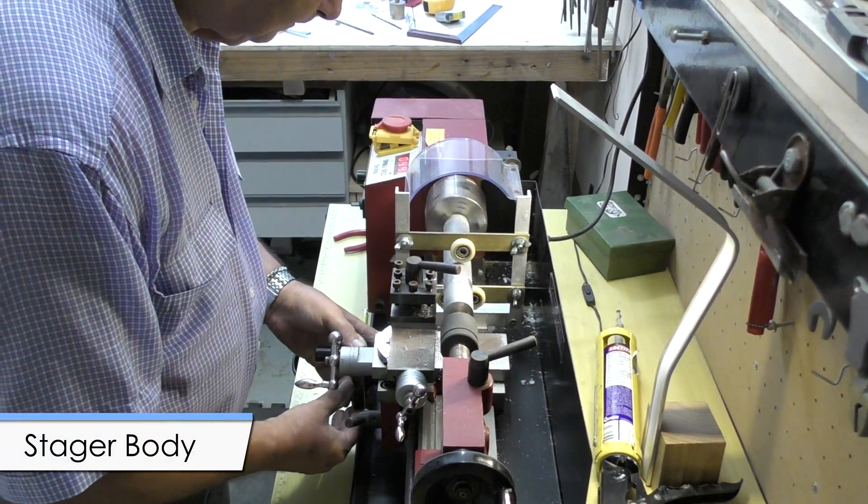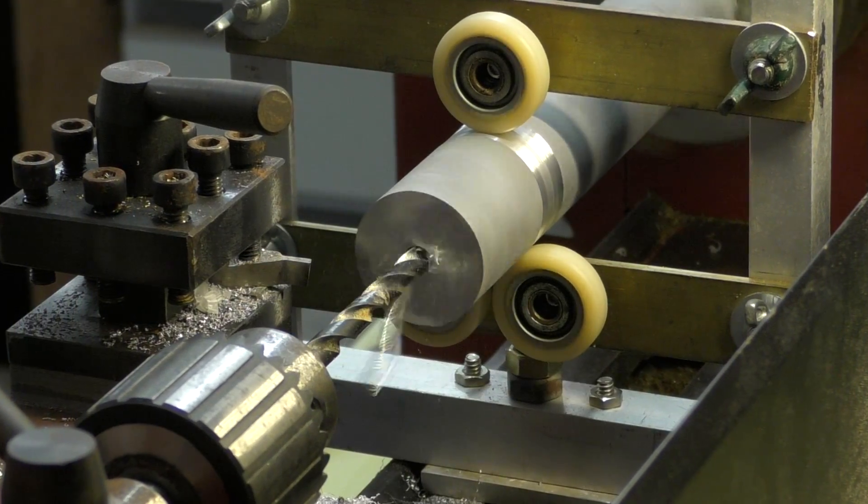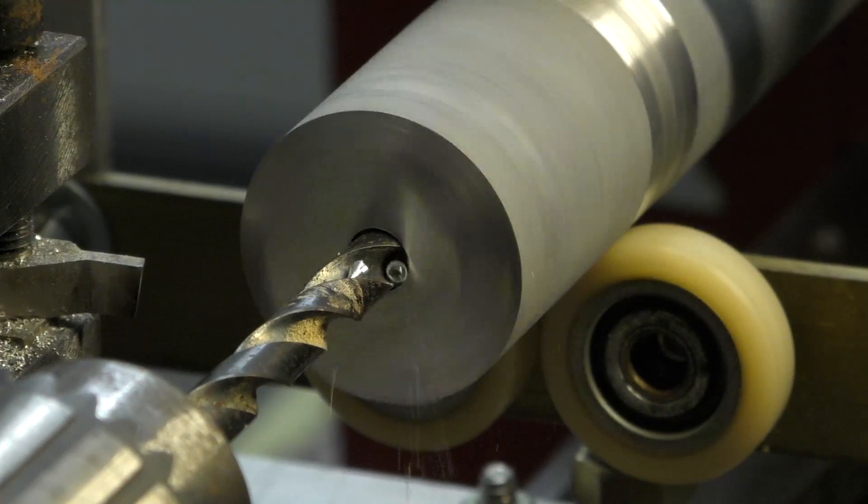Next we made the stager body out of a bar of aluminum alloy to fit the carbon tube exactly. When working with such high loads and pressures, tight tolerances become very important.